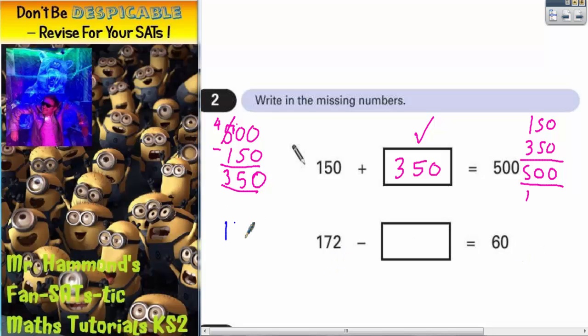So if we start with 172 and subtract 60, because 60 plus this number equals 172. So if we take the 60 off, we will get this mystery number. So 2 take away 0 is 2, 7 take away 6 is 1, and 1 take away nothing there is 1. So this number must be 112.